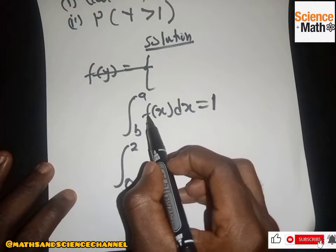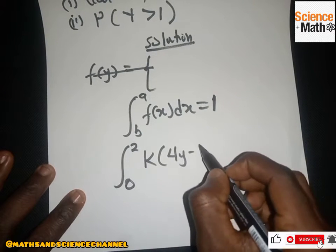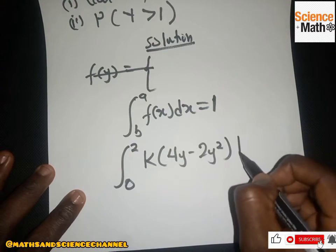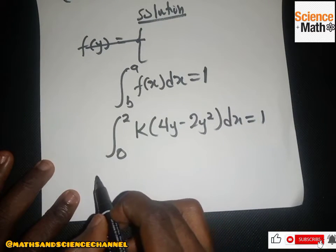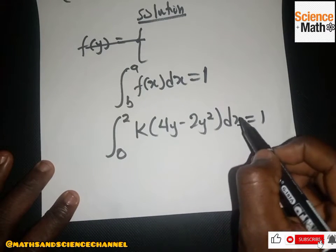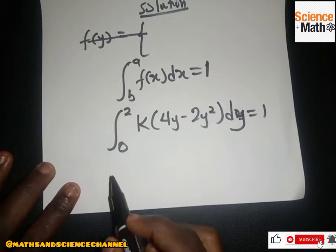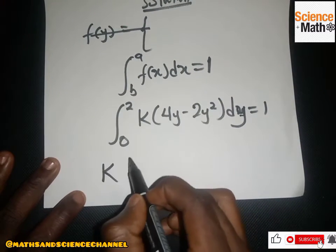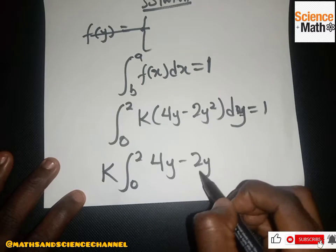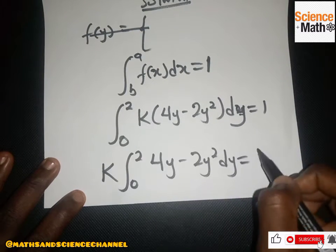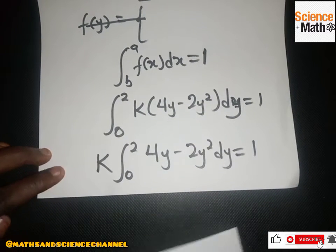So we have the integral from 0 to 2 of f(y), which is k(4y - 2y²), dy, set equal to one. Since we are integrating with respect to y, we can bring k outside: k times the integral from 0 to 2 of (4y - 2y²) dy equals one.